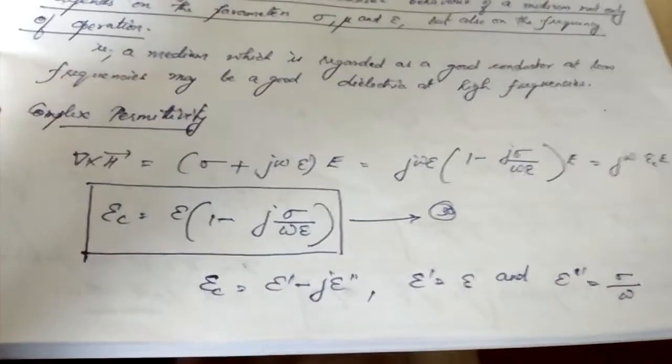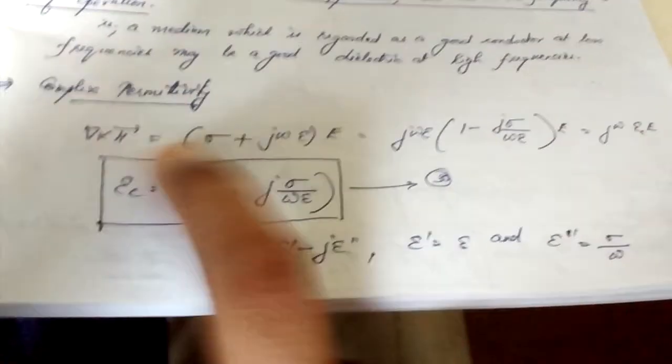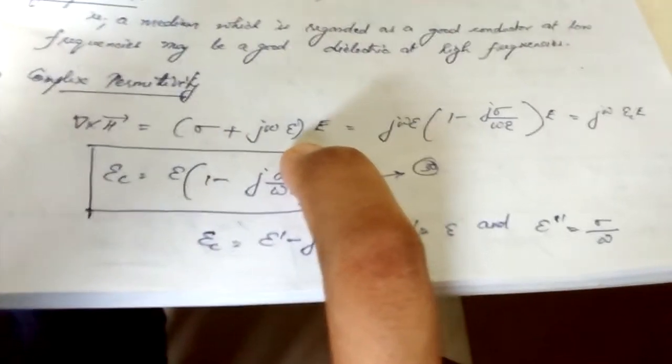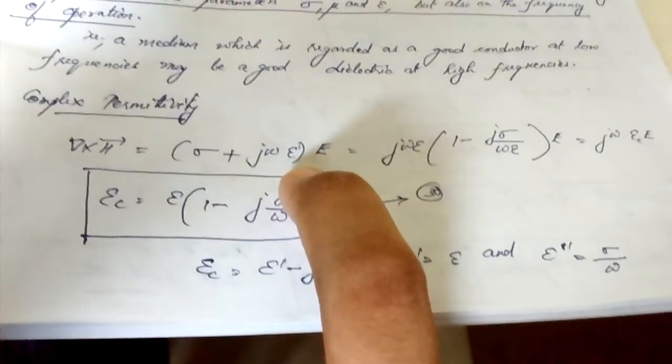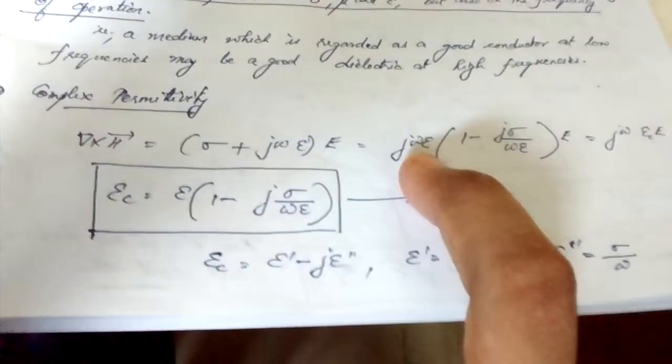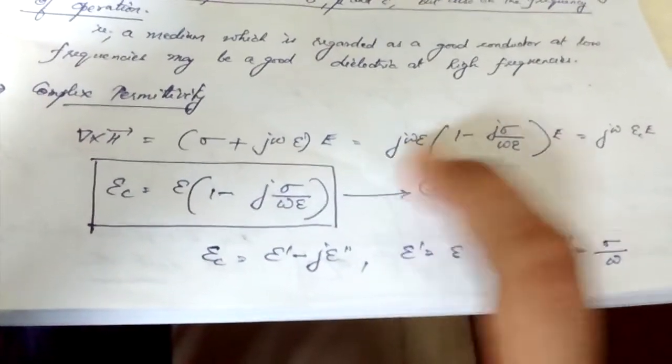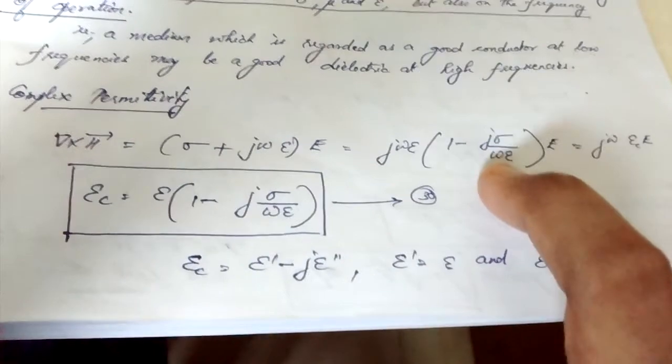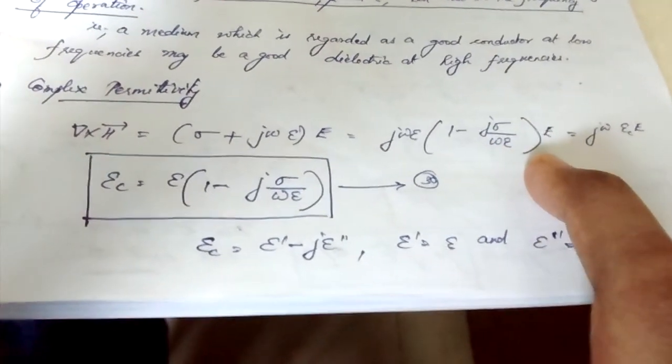Complex permittivity is derived from the expression for del cross H, which is sigma plus j omega epsilon into E. Taking omega epsilon outside, you will get j omega epsilon into 1 minus j sigma by omega epsilon into E.